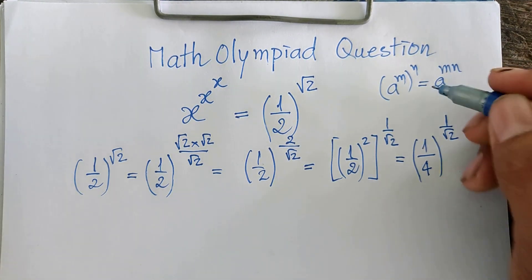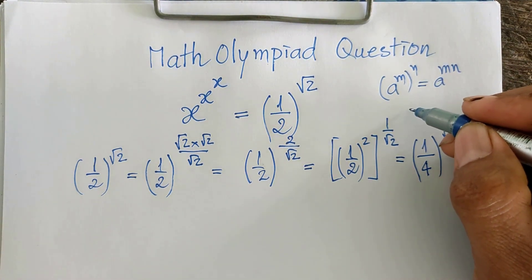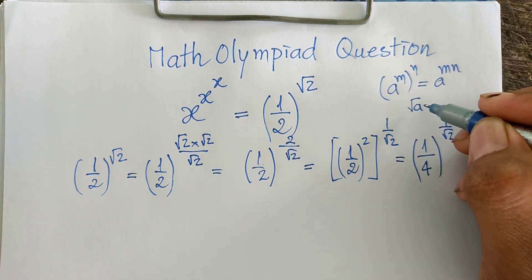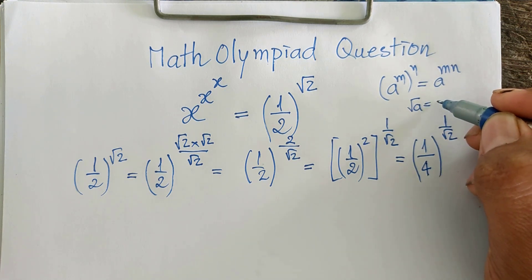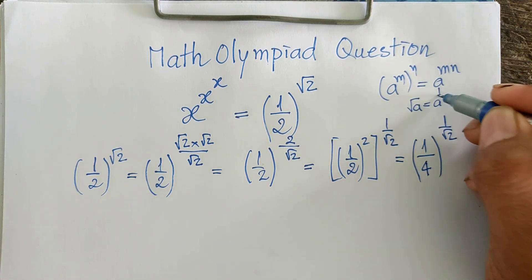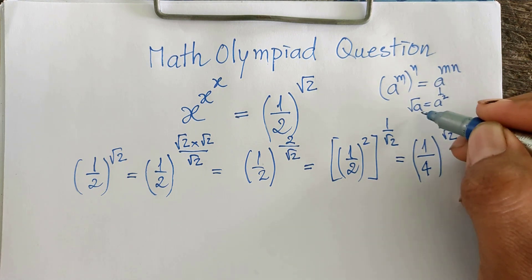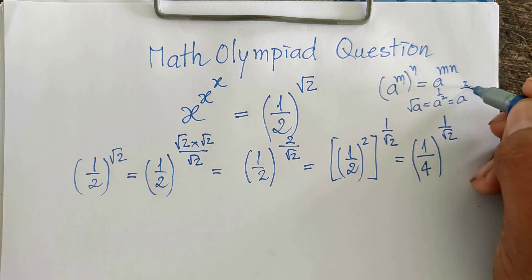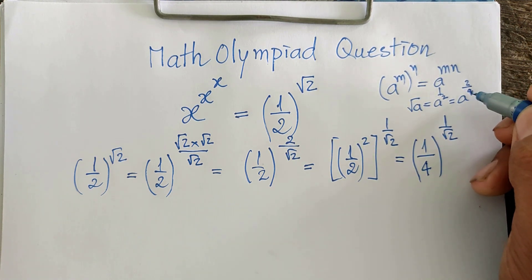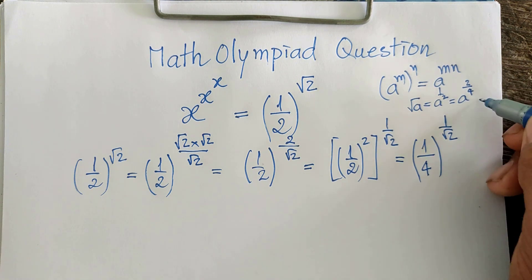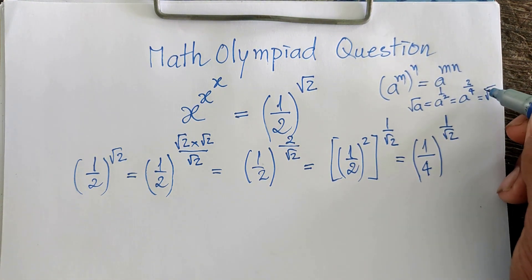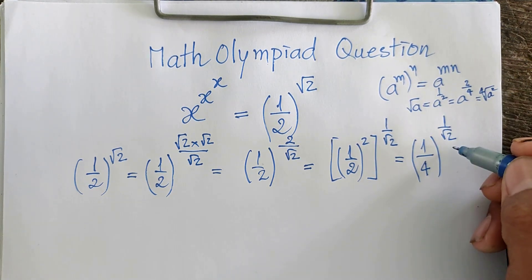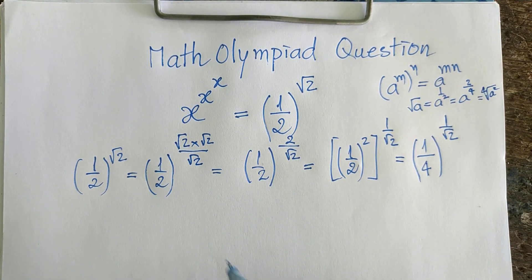Now we know that if we have the square root of s, we can write it as s to the power of 1 divided by 2. So this expression can be written as a^(2/4). If we simplify 2/4, we get 1 divided by 2. So this can be written as the 4th root of a squared.